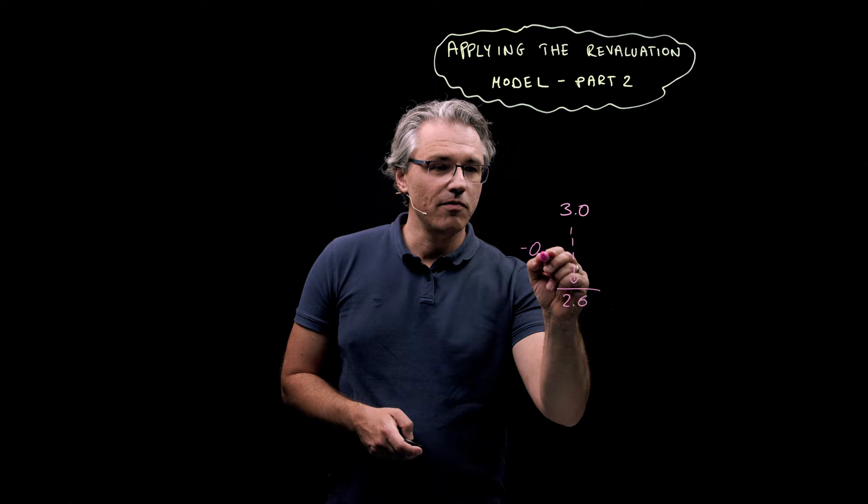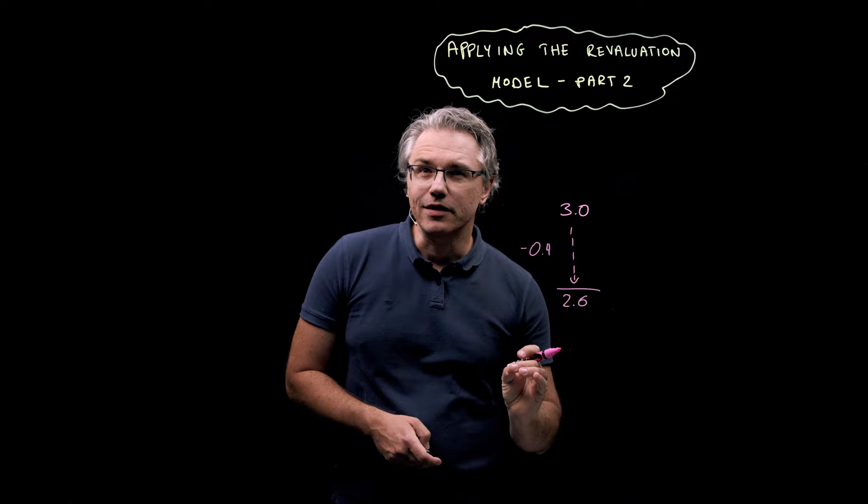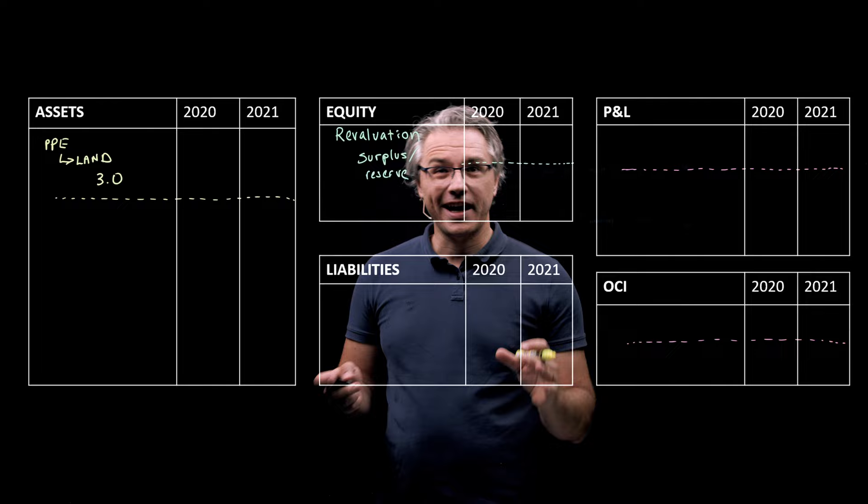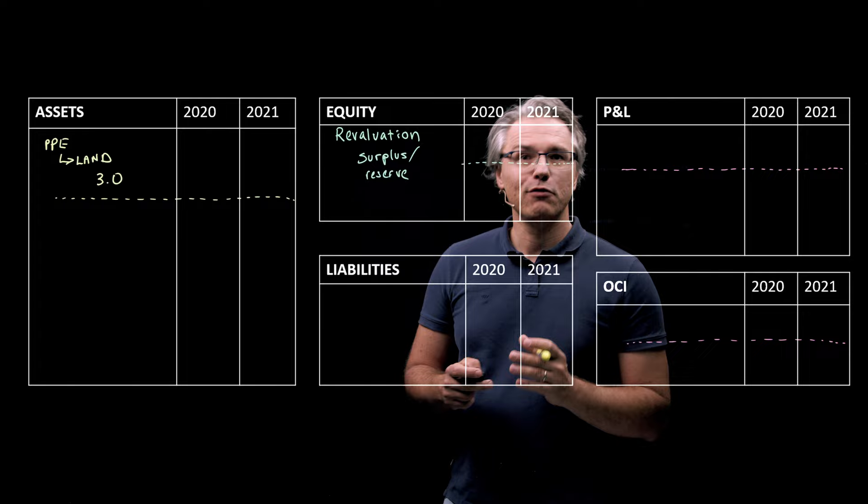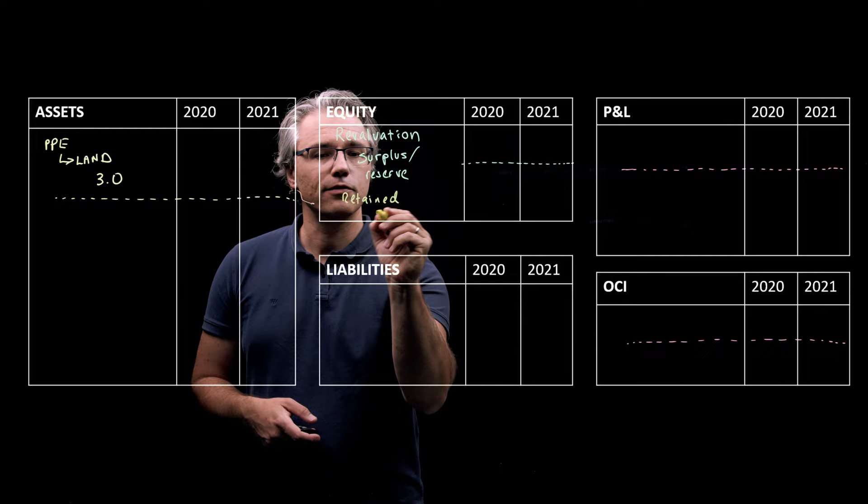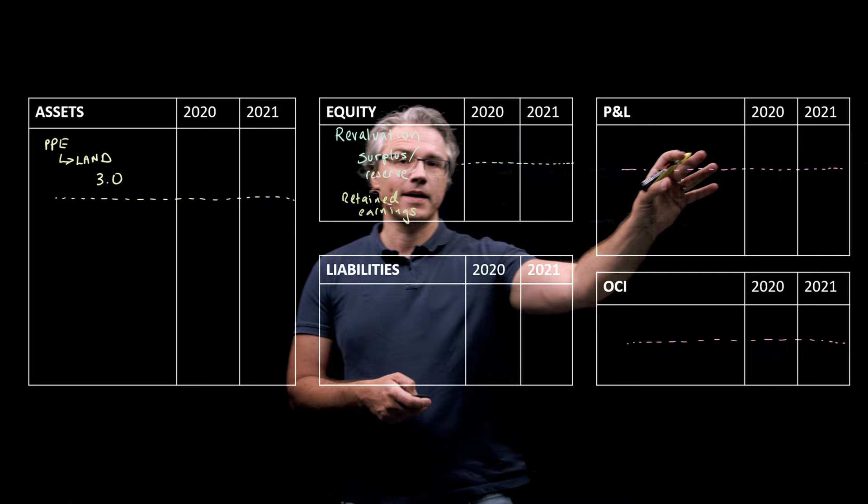Now, how do we deal with this? Let me show you using my financial statements template. We already have the plot of land sitting under PPE within assets. And I've also got the equity segment set up over here with revaluation surplus or reserve. And I'm also going to write retained earnings down here, as that may come in useful if we are going to do any entries which impact P&L and therefore get transferred to retained earnings as well.